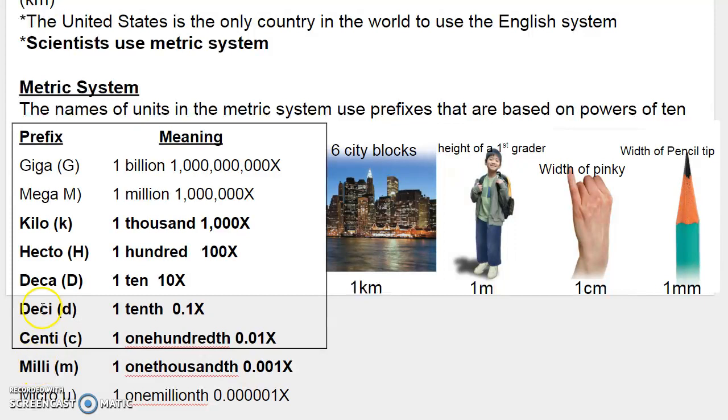So again, you need to know these six prefixes, and you will need to know them in order. Kilo, hecto, deca, deci, centi, milli. Right here, right between deca and deci is where you have your base unit, and I'll get to those in a little bit. So again, here are your six prefixes that you need to know.